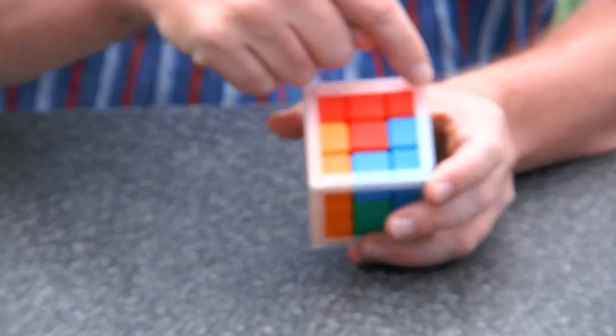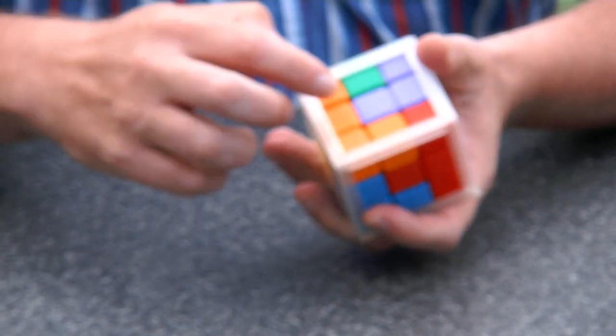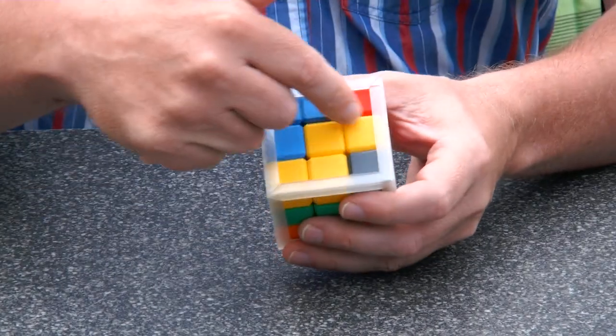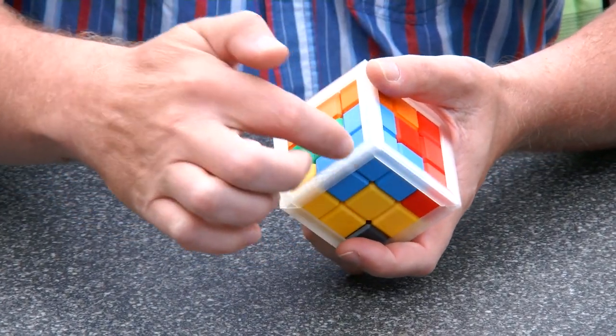And here you see it in the solved position, and we see all the Soma pieces, like the T, the L piece. Here we have a yellow Z, we have the blue Y piece.